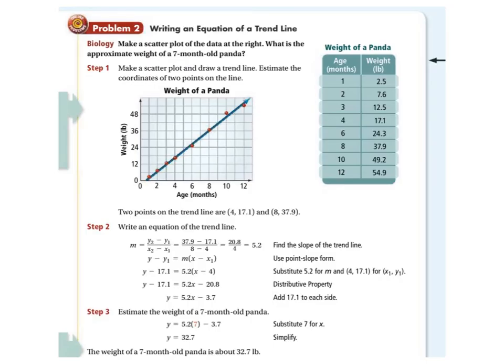Okay, so writing an equation of a trend line. So again, you've got some points here. You're plotting. These are in order at least. So this is the weight of a panda versus its age. So year 1, it's 2.5. Year 2, 7.6, so on and so forth. And we go ahead and graph those. So there's that 1, 2.5, 2, 7.6, so on and so forth. And we're done.